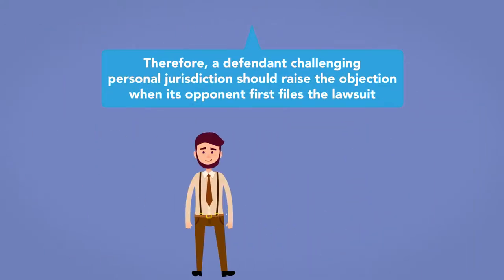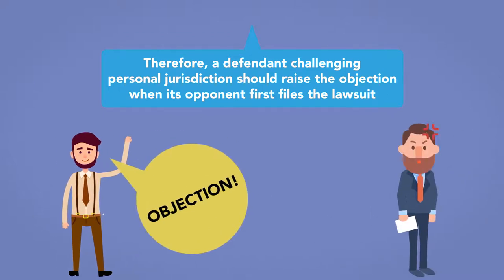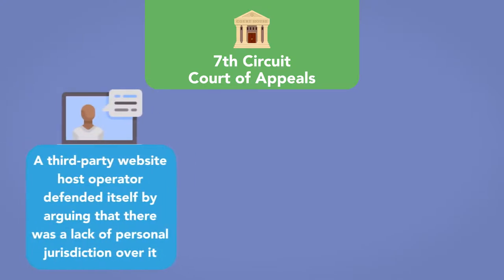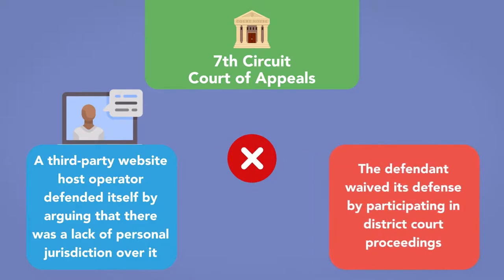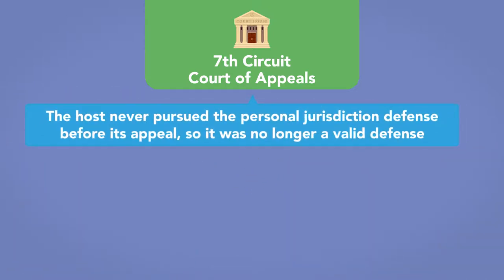Therefore, a defendant challenging personal jurisdiction should raise the objection when its opponent first files the lawsuit. In one case involving alleged defamatory statements made online, a third-party website host operator defended itself by arguing that there was a lack of personal jurisdiction over it. The Court of Appeals for the Seventh Circuit disagreed and held the defendant waived its defense by participating in the district court proceedings, which included briefing and oral arguments addressing the merits of the claims. The host never pursued the personal jurisdiction defense before its appeal, so it was no longer a valid defense.